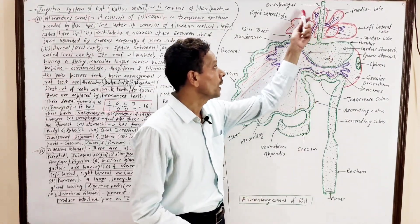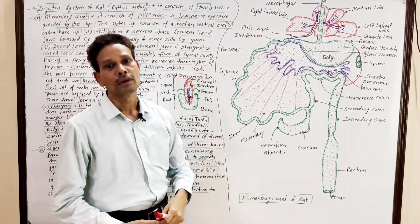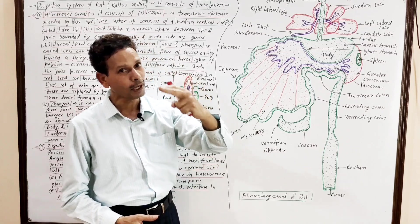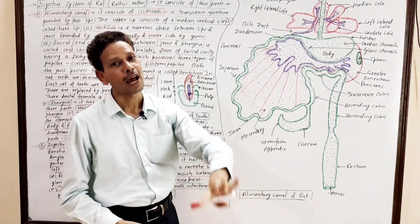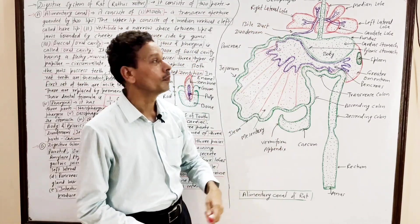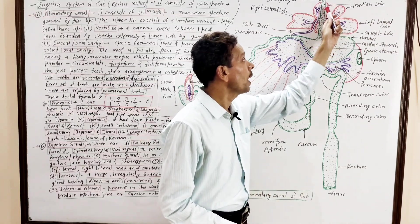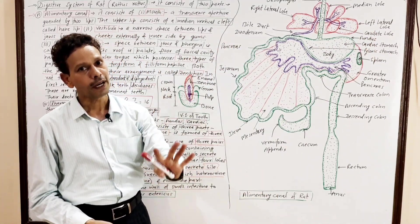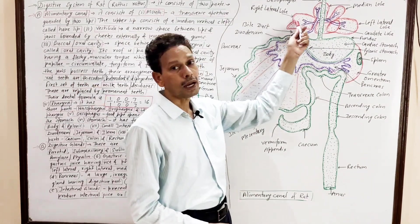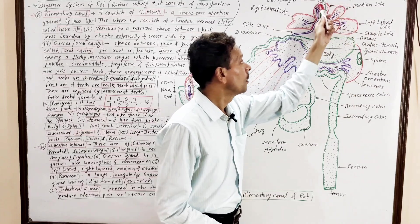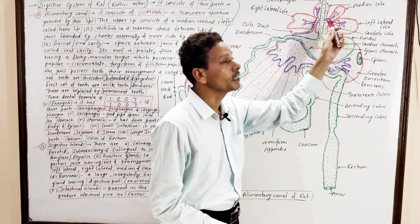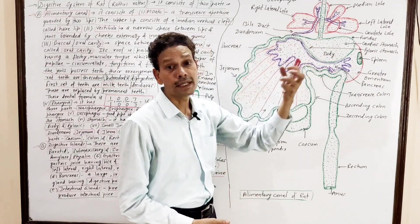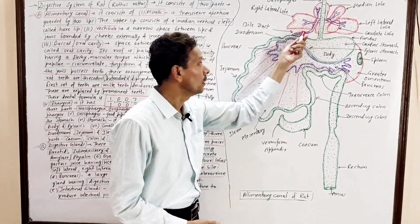The second type of digestive gland is the liver — a large, multi-lobed digestive gland. Note down for competition students: in case of RAT, the liver has four lobes — the right lateral lobe, the left lateral lobe, the medial lobe having two parts, and a very small caudate lobe. The liver secretes bile, which is carried by the bile duct and opens into the duodenum.